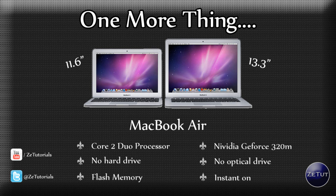It has a Core 2 Duo processor and NVIDIA GeForce 320M graphics, so it should have no problem handling HD video. Notably, it has no hard drive and no optical drive — it uses flash memory instead. You lose some storage space, but you gain a lot of speed, which is important since it doesn't have the new i-series processors. Flash memory is about two times faster than a normal hard drive. It's also much lighter because the flash storage is slapped right on the motherboard, and it gives features like Instant On.